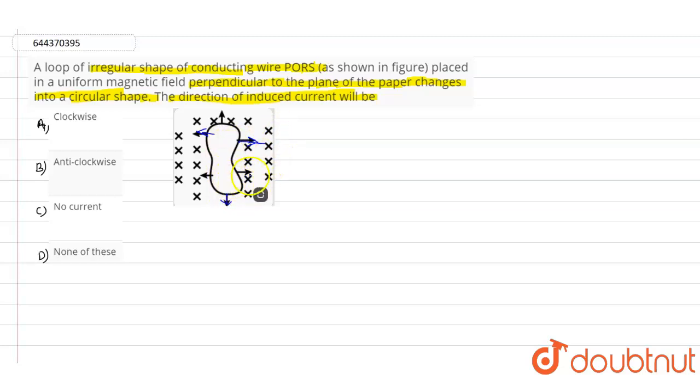Here we need to find out the value of the induced current. We know that force F is equal to i into l bar cross b bar.